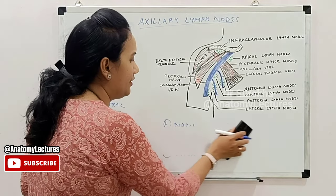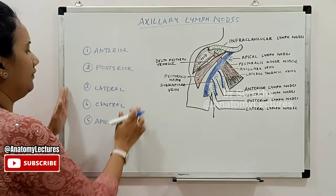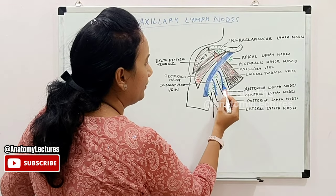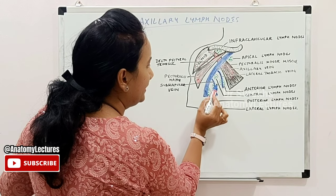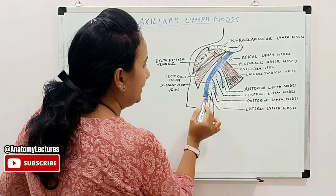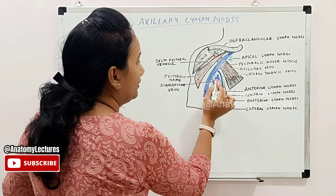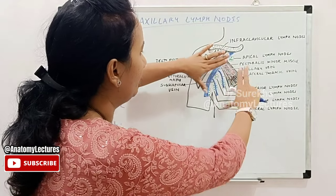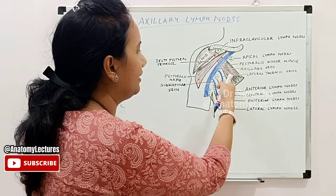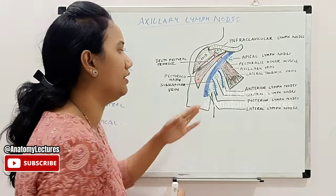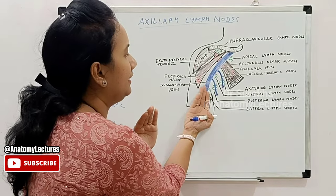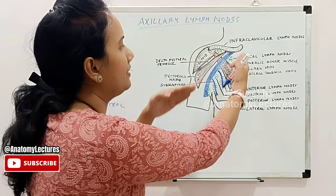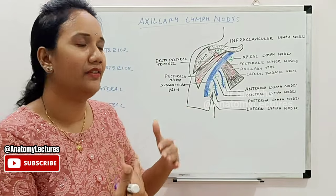The five groups of axillary lymph nodes are named based on their location within the axilla: the anterior group is on the anterior wall, the posterior group on the posterior wall, the lateral group on the lateral wall, the central group at the base, and the apical group at the apex.